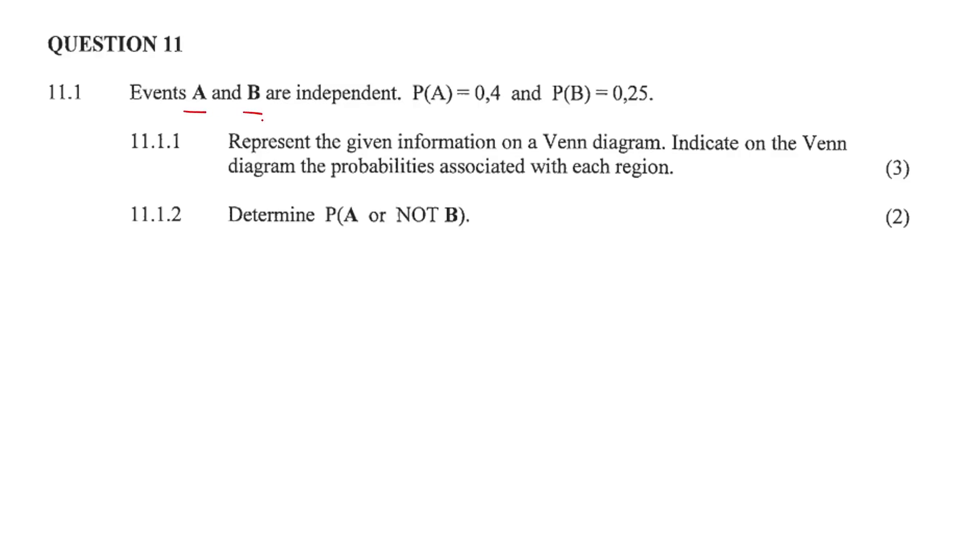Events A and B are independent. The probability of A occurring is 0.4 and the probability of B occurring is 0.25. Represent the given information on a Venn diagram. Indicate on the Venn diagram the probabilities associated with each region.